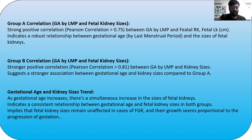The correlation study was conducted for gestational age by LMP and kidney sizes, and a strong positive correlation was noted in both groups. As gestational age increases, there is a simultaneous increase in the size of the kidneys, indicating a consistent relationship between gestational age and fetal kidney sizes in both groups. This implies that fetal kidney sizes are affected in cases of FGR, and the growth seems to be proportional to the duration of gestation.